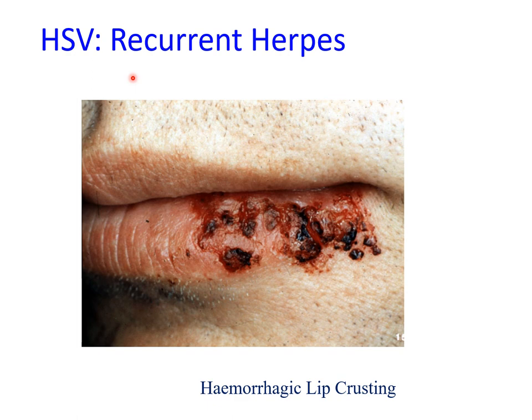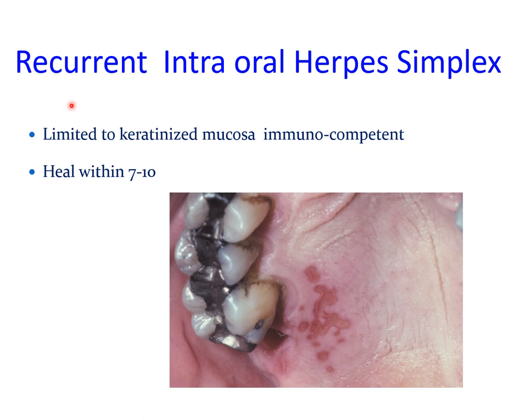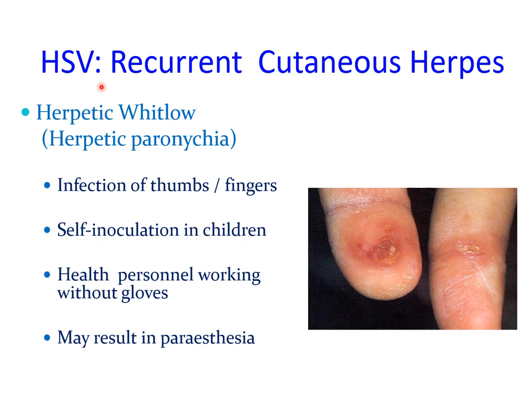Rarely, recurrent herpetic labialis can be more severe and present with hemorrhagic crusting of the lips, with a differential diagnosis including paraneoplastic pemphigoid and erythema multiforme. In addition to herpetic labialis, recurrent herpes can also present intraorally as ulcerations involving the keratinized mucosa, which tend to heal within 7 to 10 days. Recurrent herpes simplex can also present as cutaneous herpes, another term for which is herpetic whitlow.